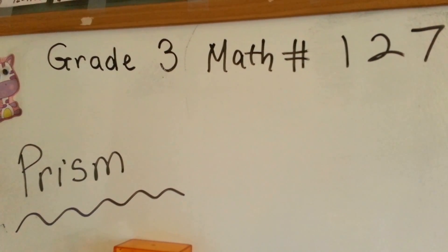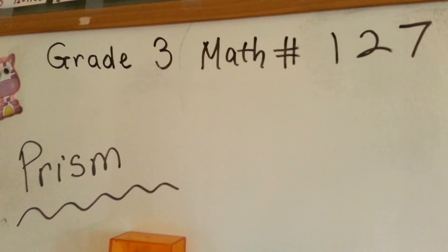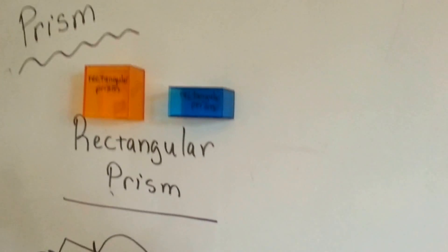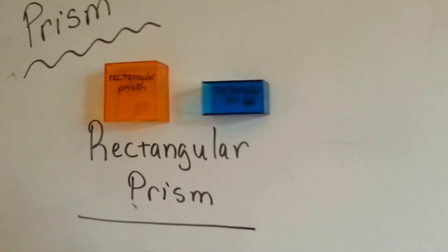Grade 3 Math, number 127, Prism. What is a prism? Well, here's a rectangular prism.